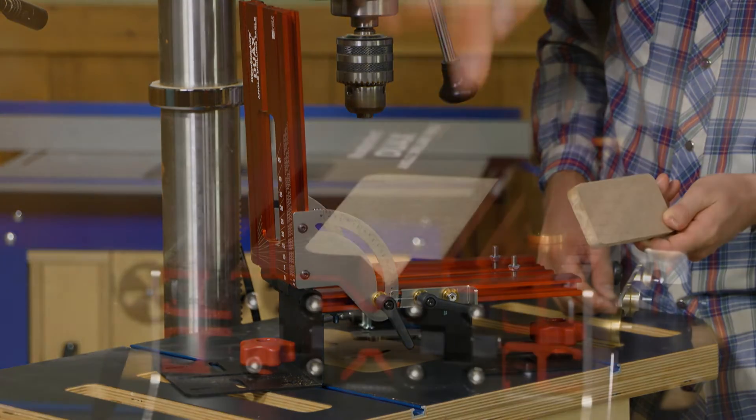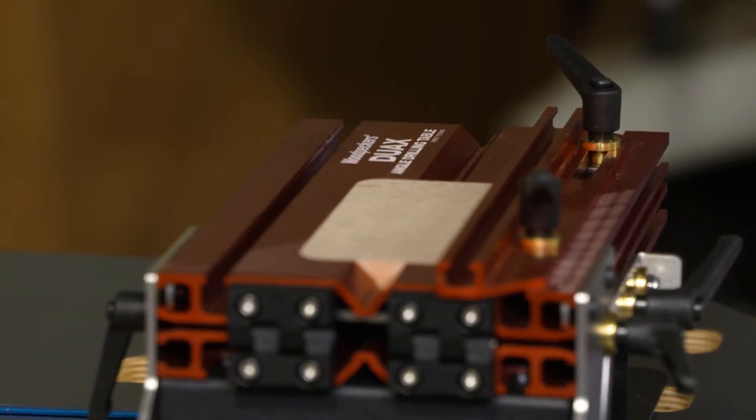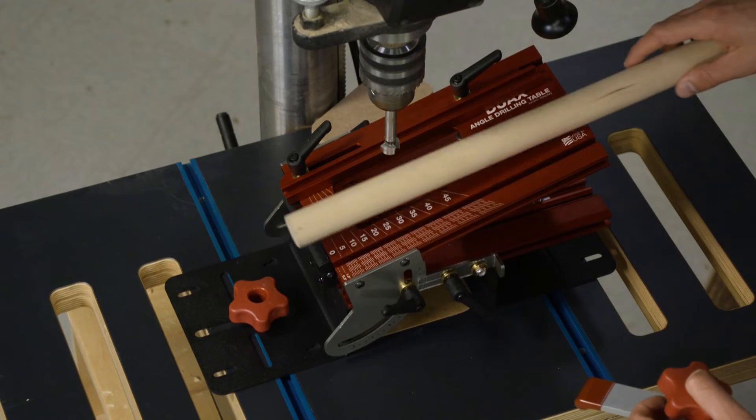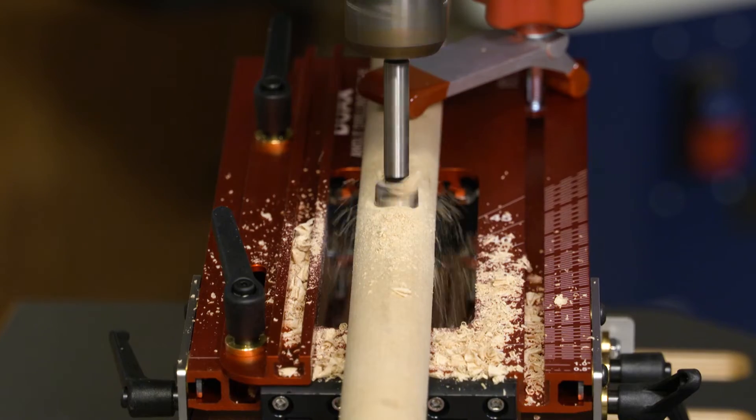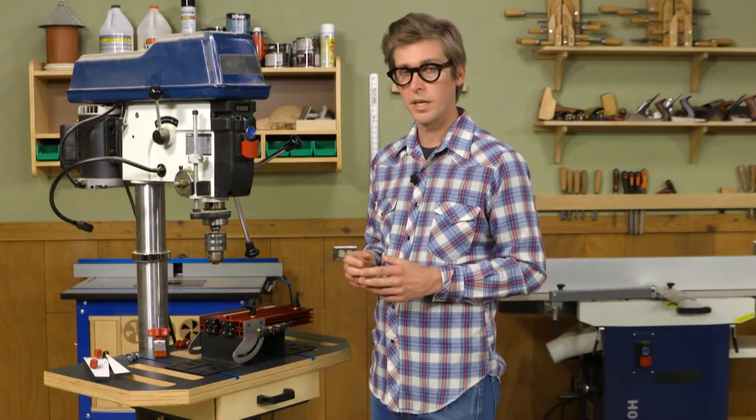There is a V-groove that runs along the center for drilling round parts, whether it be for chairs or dowels. It does lock that in place. There are a few more accessories—again, like I said earlier, clamping is always an issue with any drill press.